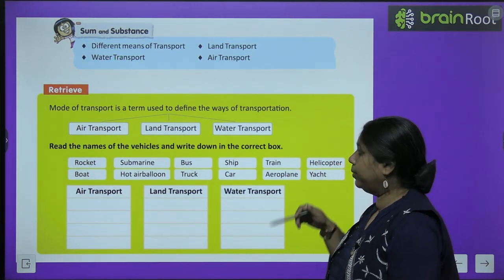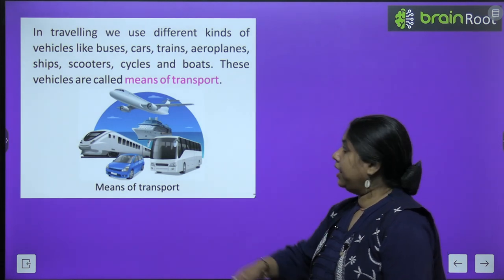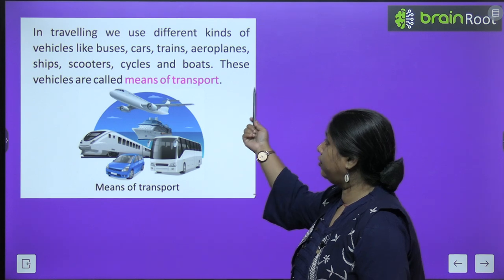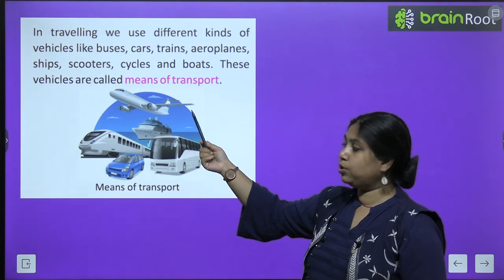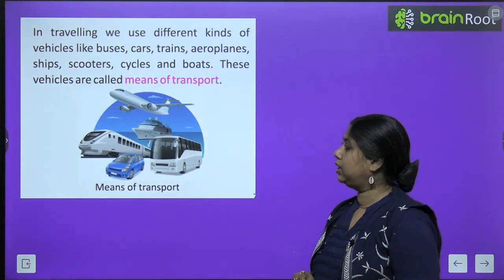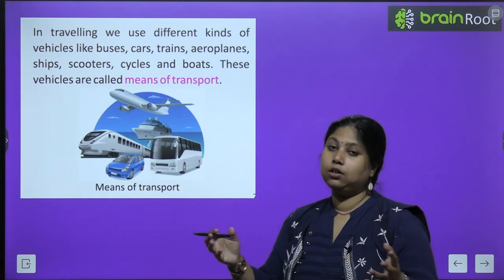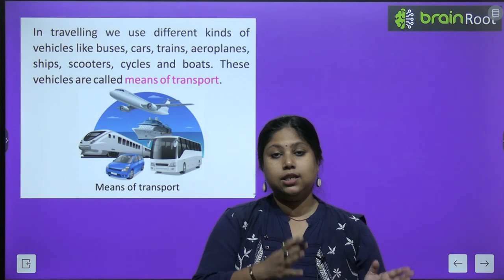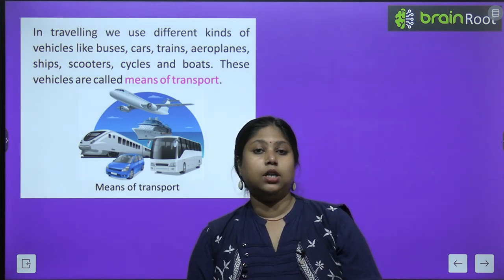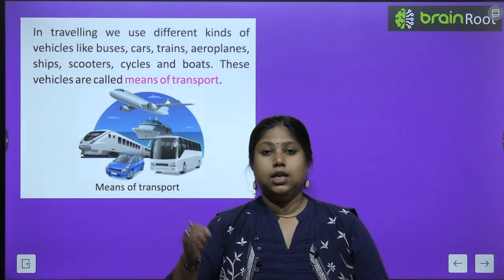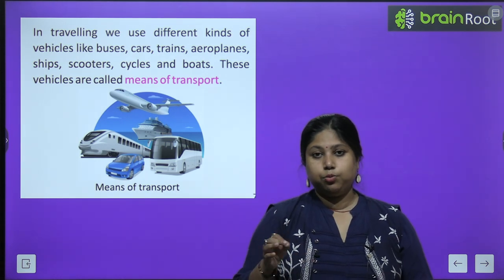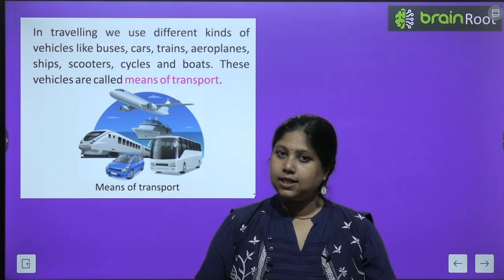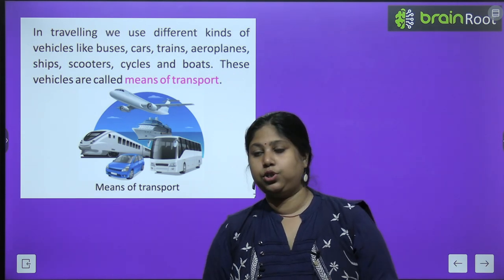Now let's get started with the chapter. In travelling, we use different kinds of vehicles like buses, car, trains, aeroplanes, ships, scooters, cycles, and boats. These are all called means of transport — any transport used for moving from one place to another is a means of transport.